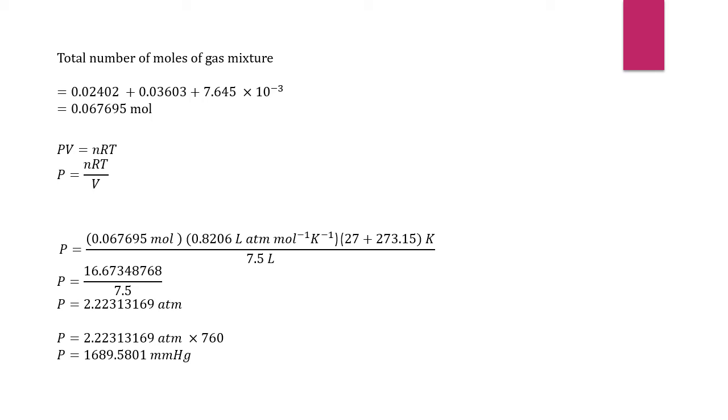We will do the calculation and we will get 2.22313169 atm. We will convert to mmHg. So, 2.22313169 atm times 760, and we will get the answer 1689.5801 mmHg.